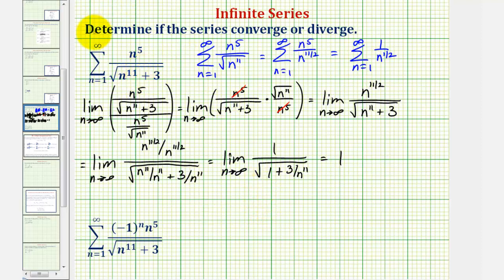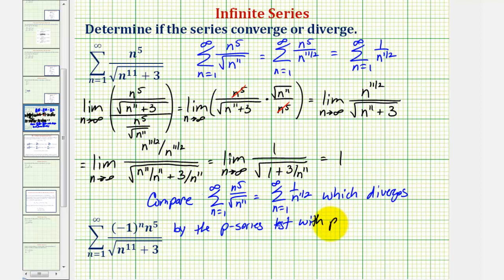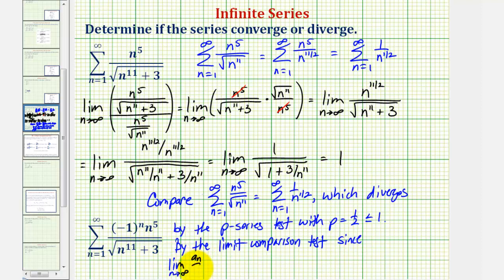To summarize: we compared the given series to the summation from n equals one to infinity of n to the fifth divided by the square root of n to the eleventh, which equals the summation of one divided by n to the one-half. This diverges by the p-series test with p equals one-half, which is less than or equal to one. By the limit comparison test, since the limit as n approaches infinity of a sub n divided by b sub n equals one, which is positive and finite, the given series also diverges.